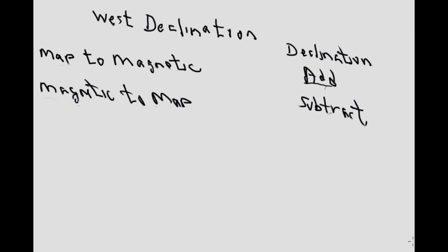Looking now at dealing specifically with west declination, all you have to remember is: if you want to go from a map bearing — sometimes called a true bearing — to a magnetic bearing, sometimes called a compass bearing, you simply add the declination. Then, if you want to go from a magnetic bearing back to a map bearing, you simply subtract the declination. That's all there is to it. If you can remember that and you're in an area of west declination, you've got the whole declination thing down.